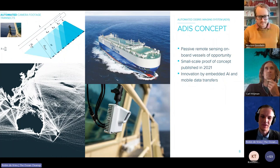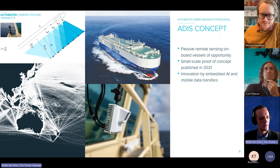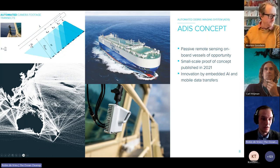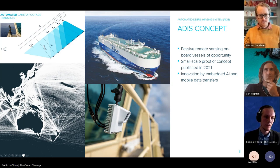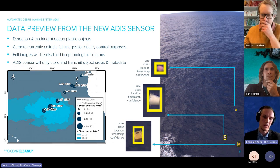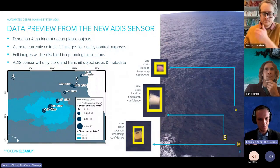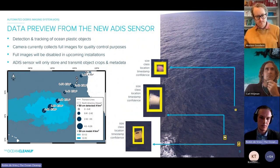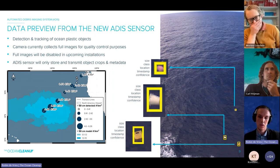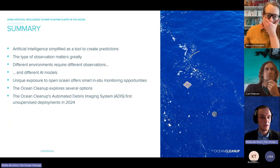I want to highlight our ADIS concept — a camera that can be plugged in very easily on a ship, making use of the fact that the entire world is traversed by ships going from port to port. It collects data along the way. The output is object detections, which can be put on a map. We make use of smart onboard processing so that only the detections themselves need to be transferred, not all the raw data.